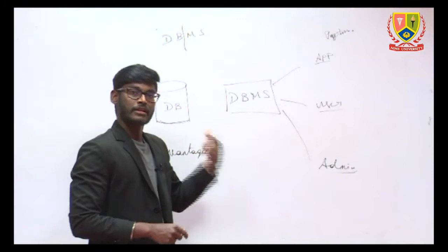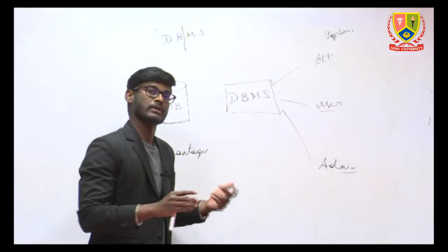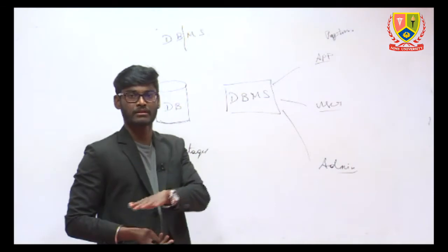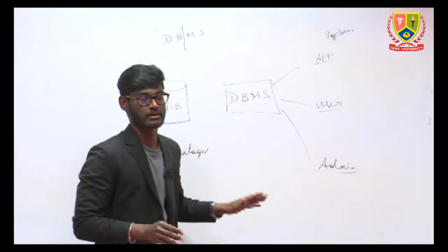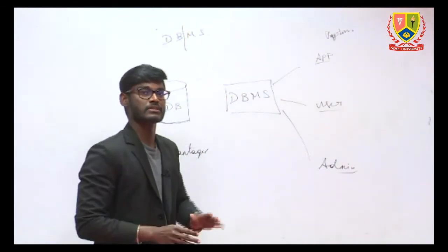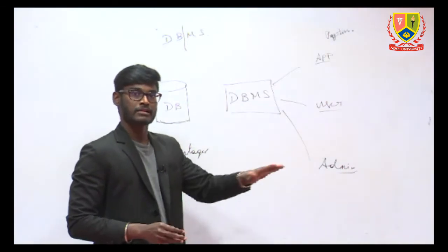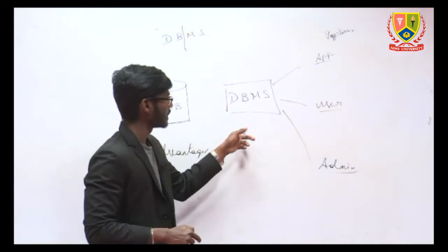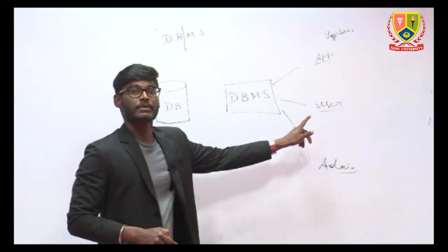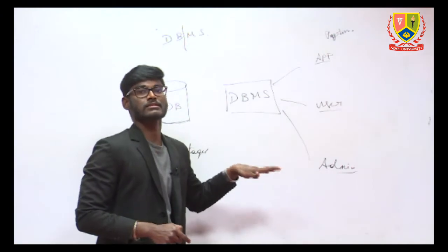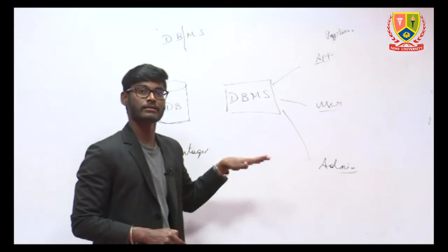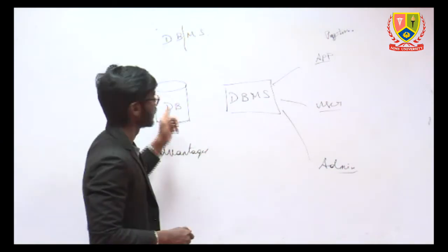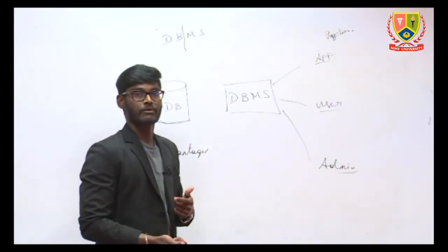The first thing is in your file system, it allows only one or two users at a time. Maybe a normal user or a guest user or an administrator. Only two or three users can access those data at a time. Only one can access data at a time. But in DBMS, thousands and millions of users can access the same resource, same data at the same time. So that is a major advantage of DBMS compared to our file system.